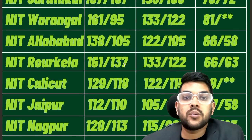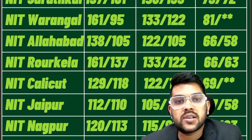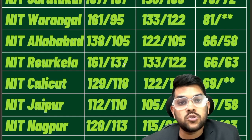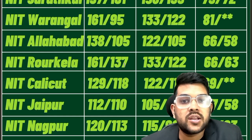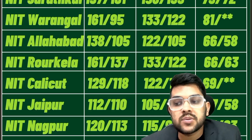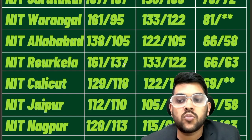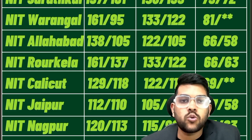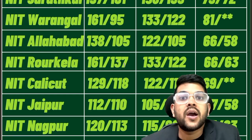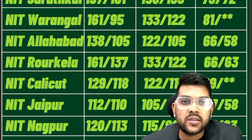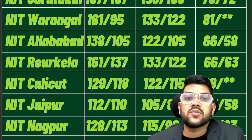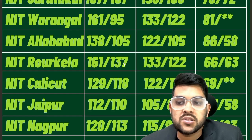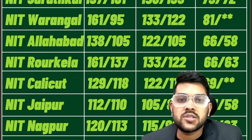I'd like to inform you about my complete mentorship and guidance program, especially for SC category students. I've been guiding students for the last 6 years. Your competition is with SC students only — you don't need to compete with General or EWS. For example, NIT Calicut's General cutoff is around 200, 180, 160, but for SC it's only 129. Smart preparation is more important than just hard preparation. You can contact me — there is a very nominal charge.